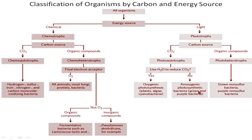Anoxygenic photosynthesis occurs in green and purple bacteria. Examples of photoheterotrophs include green non-sulfur bacteria and purple non-sulfur bacteria. That's it for today — thank you for watching this video, bye bye.